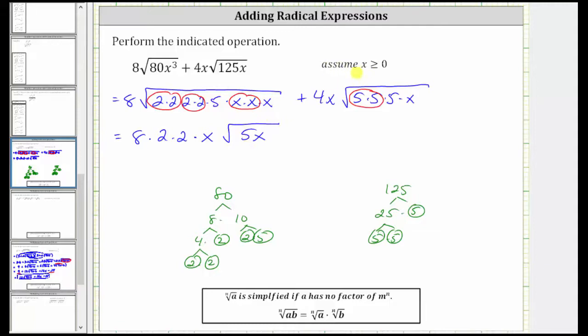Because we're told here to assume that x is greater than or equal to zero or non-negative, we will not include an absolute value here for this x to the first power outside the square root. Remember when simplifying square roots or radicals with an even index that contain variables, if the simplified part contains a variable with an odd exponent, we need to include the variables in an absolute value, unless we're told to assume the variables are non-negative.